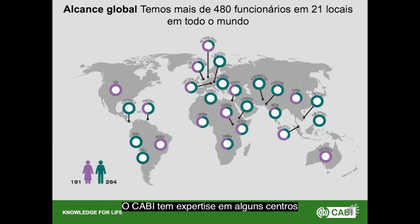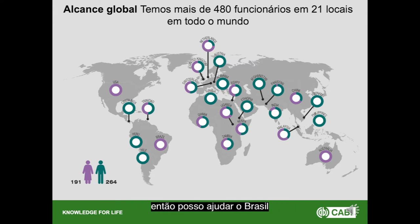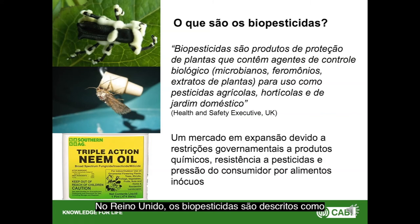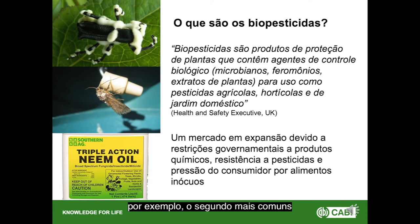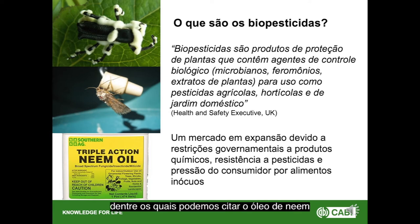CABI has expertise in certain centers. For example, I'm from the UK and have expertise in biopesticides, so I can help Brazil control locusts and grasshoppers. In the UK, biopesticides are described as plant protection products containing biological control agents, split into three categories: microbials (top picture), pheromones — often mating-disrupting pheromones (middle picture) — and plant extracts, the most common being neem oil (bottom picture).